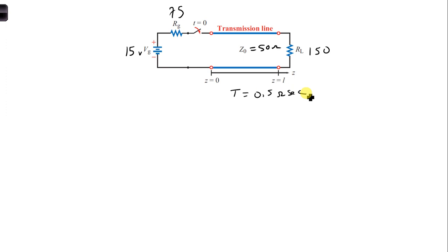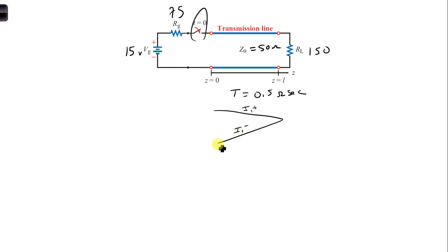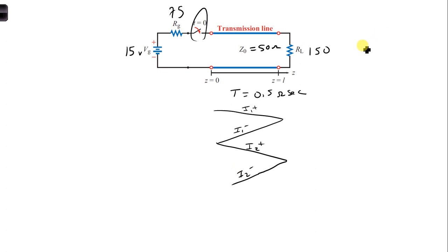We want to create a bounce diagram up to the second negative traveling current wave. So when the switch closes, we're going to get I1 plus traveling down the transmission line. When it reaches the load, we'll get I1 minus. When it reaches the generator, we'll get I2 plus. And then when it reaches the load, we'll get I2 minus. So we need all of these components on the bounce diagram, which means we need to calculate some reflection coefficients.